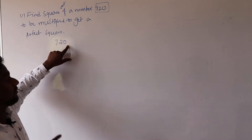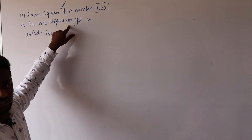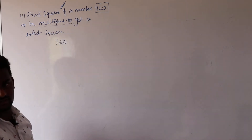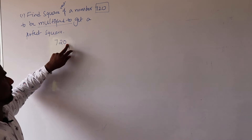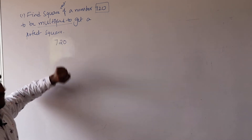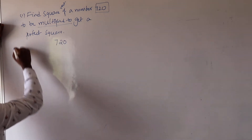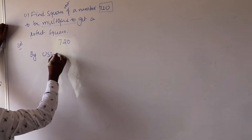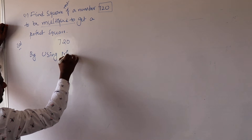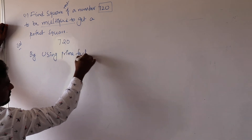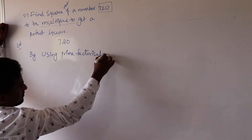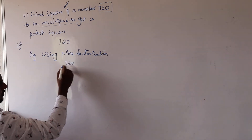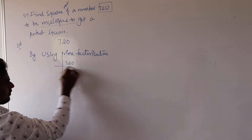How will we get that? We can multiply this number by some number and it will become a perfect square. We want to find that multiplied number. By using prime factorization, we want to convert 720 into a product of prime numbers.